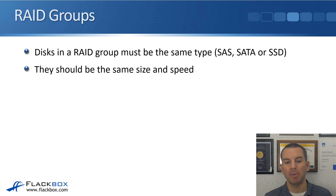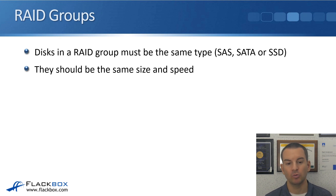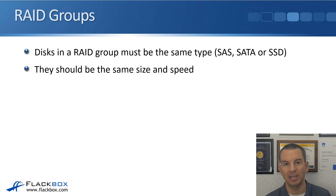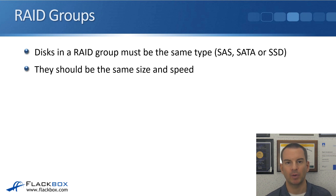The disks in a RAID group must be the same type — all SAS, SATA, or SSD. They should also be the same size and speed. Size and speed are not enforced, but it's very important. If you have drives of different sizes in the same RAID group, they'll all operate at the capacity of the smallest drive. For example, mixing 1TB and 500GB drives means all drives are treated as 500GB, wasting space. Similarly, speed will be limited to the slowest drive. So disks in your RAID group should be the same type, size, and speed.